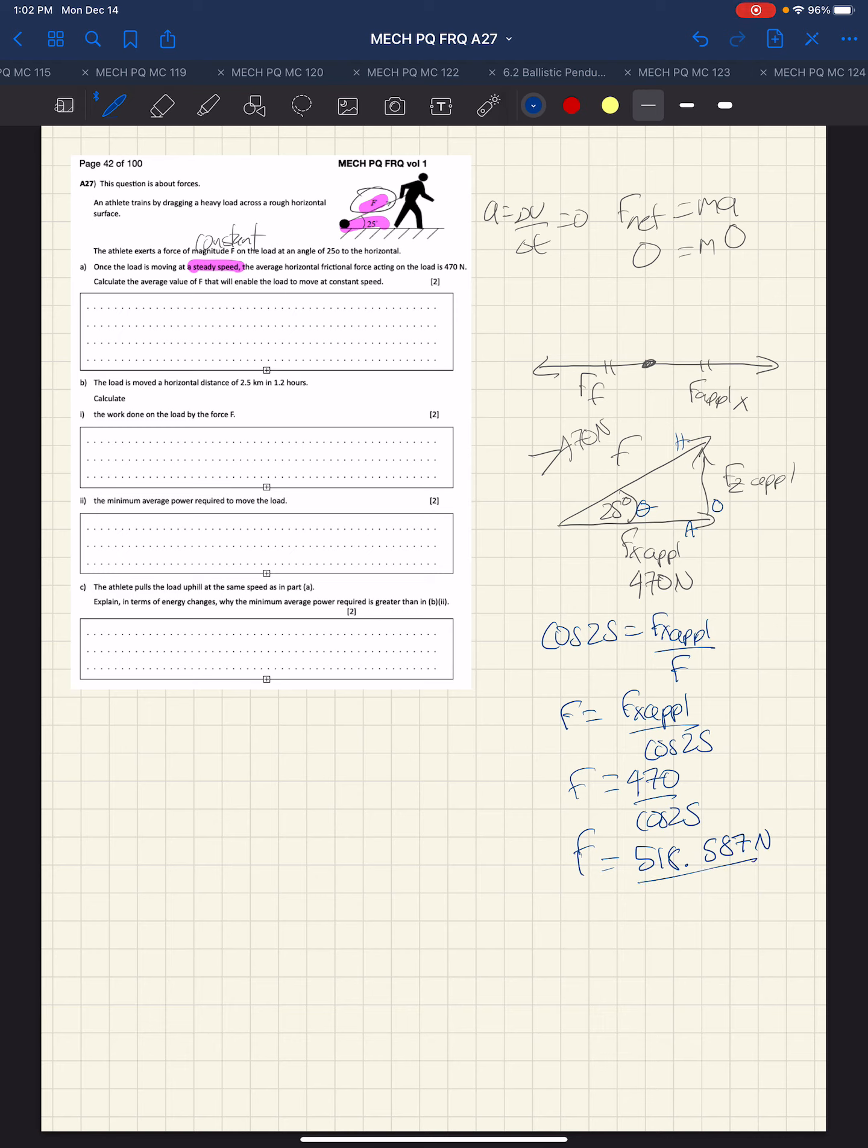So we can report two significant digits. F is 5.2 times 10 to the second newtons. We go back and double-check—the average force that will move at constant speed—and that's our answer.